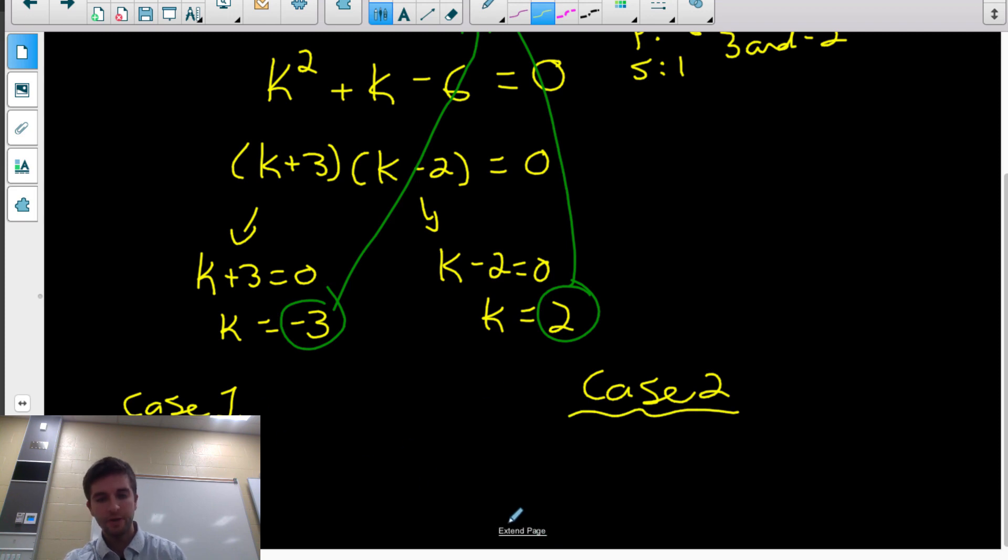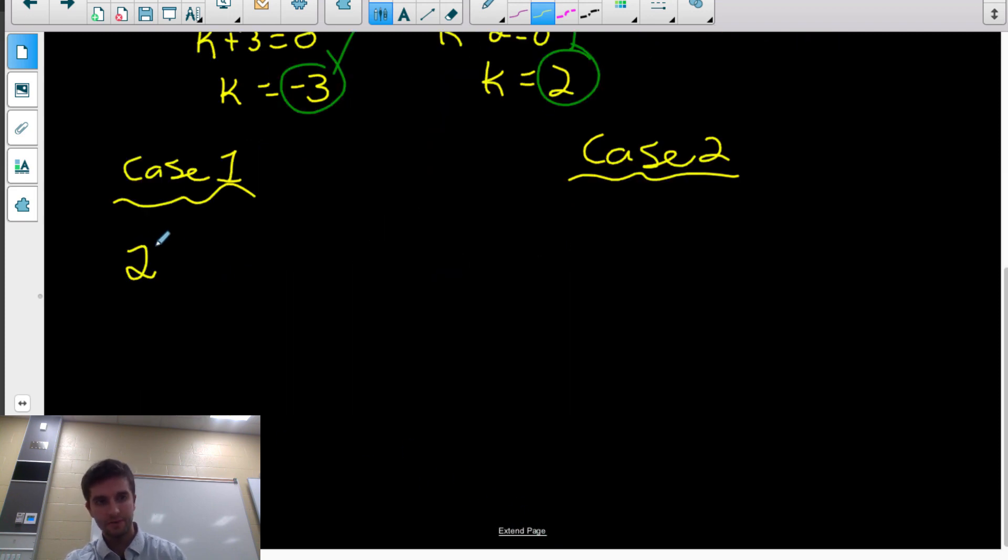So we will have case 1 and case 2. So case 1, so we said in our let statement, 2 to the x equals k. Well, we found k could be negative 3. So 2 to the x could be negative 3. Case 2, we figured out another possible value for k was 2. So 2 to the x equals 2.